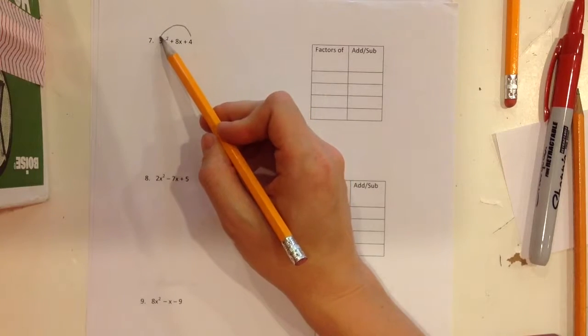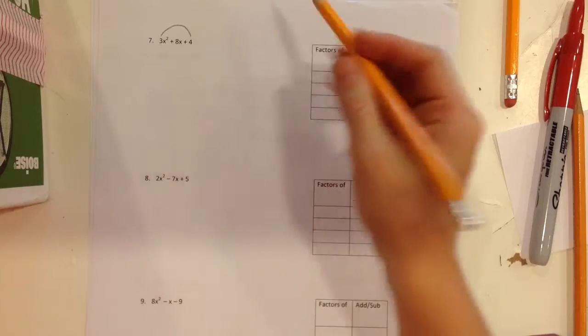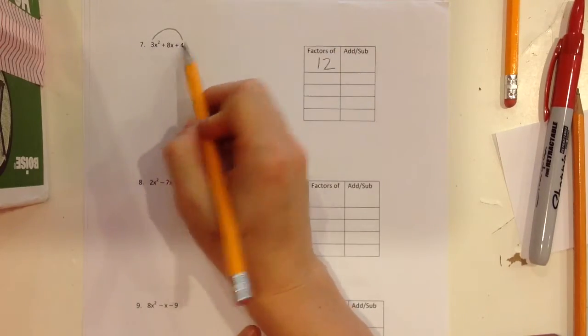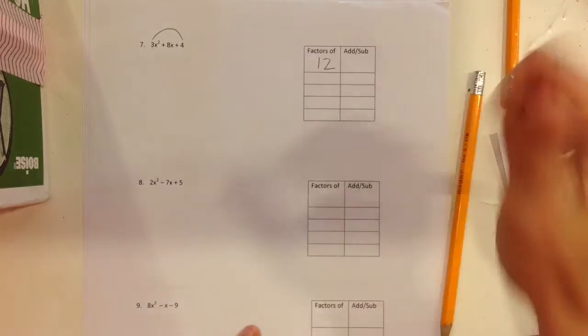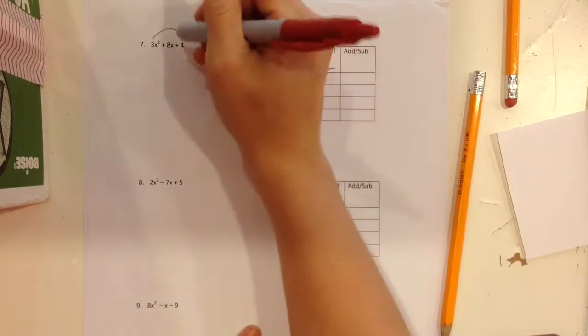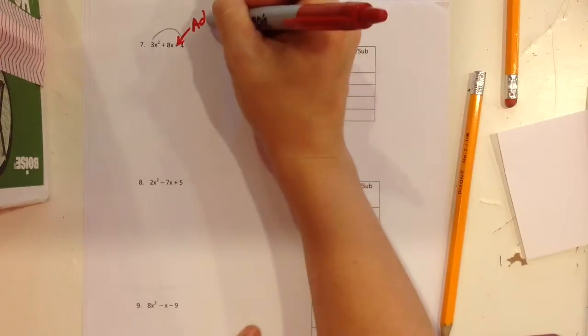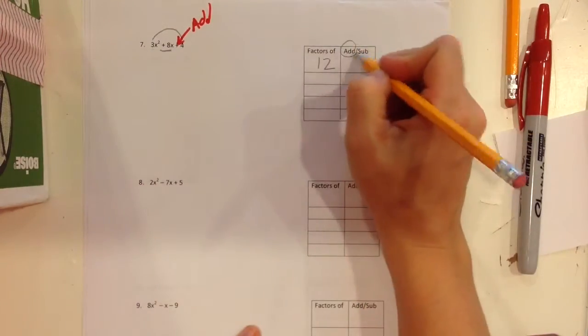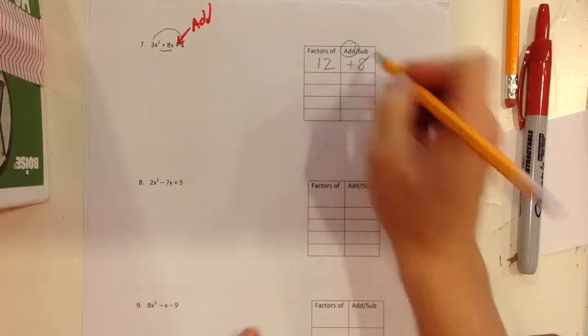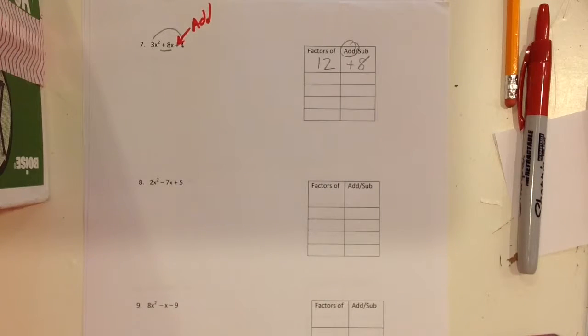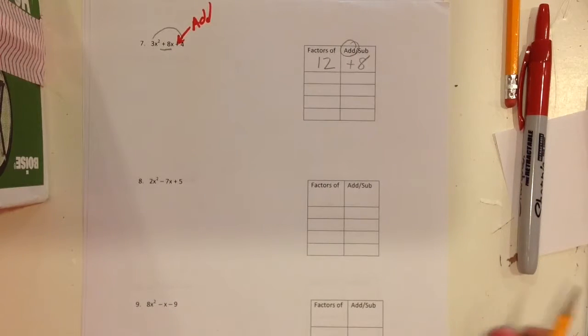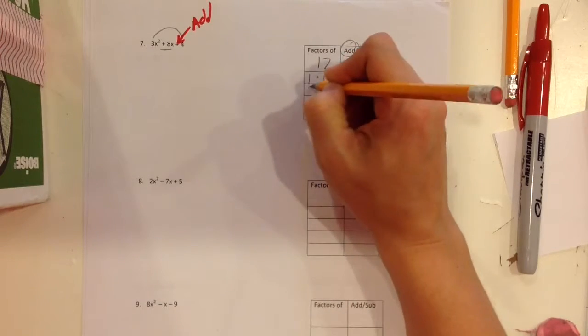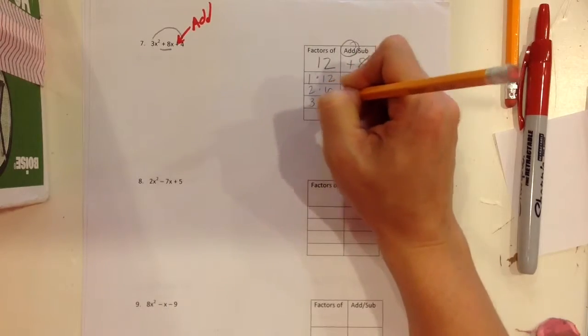So when I multiply the 3 and the 4, I get 12. So I'm going to find the factors of 3 times 4 is 12 that add to give me a positive 8. So I want to find the factors of 12 that add to give me a positive 8. So let's look for the factors of 12: 1 and 12, 2 and 6, 3 and 4.